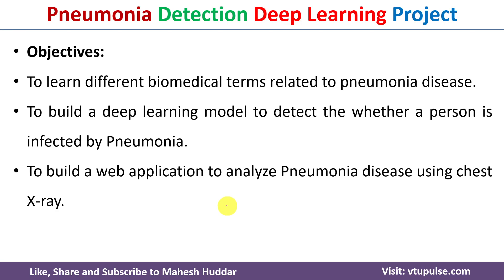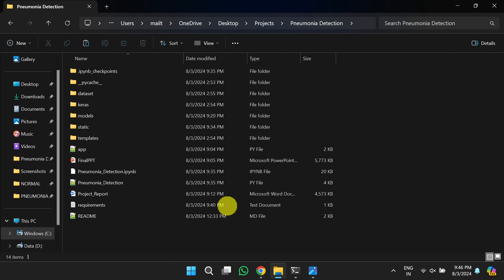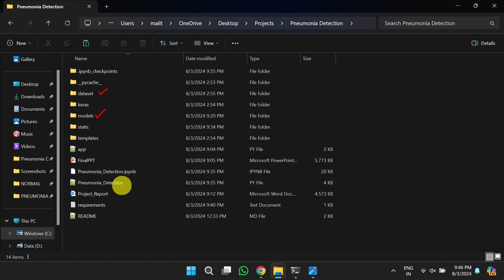To analyze the pneumonia disease project, you can follow the link to download the complete source code, documentation, and instructions. I will paste this link in the description below. Once you download the project, you will get the dataset, the pre-trained model, or you can train your own model with the help of the source code provided.